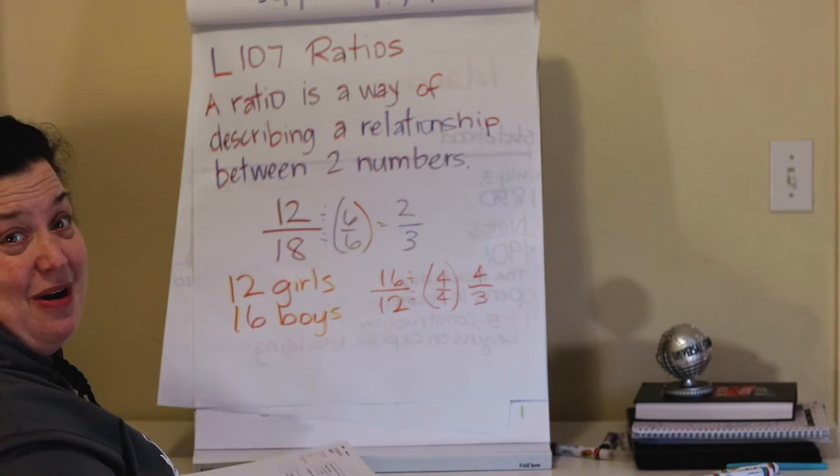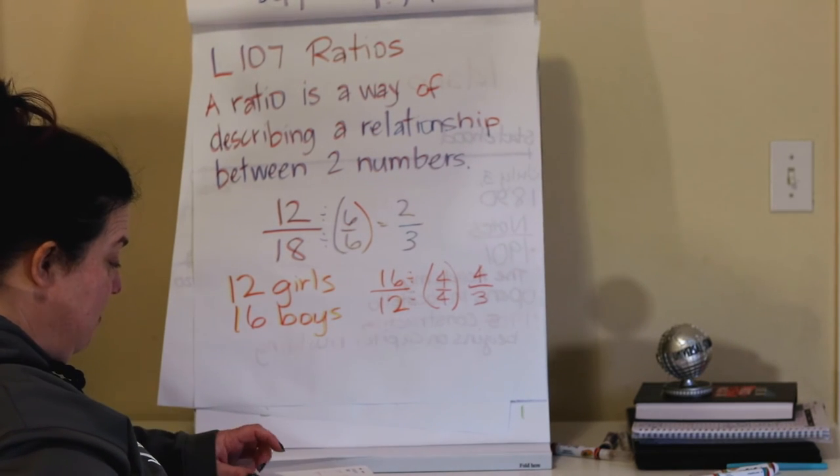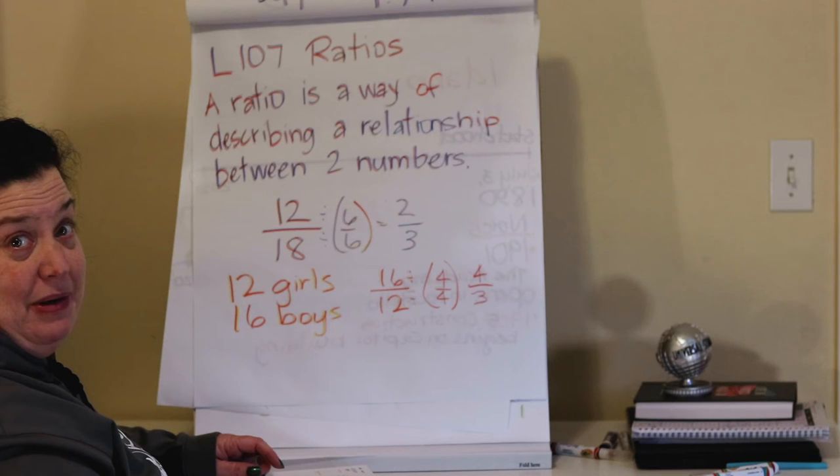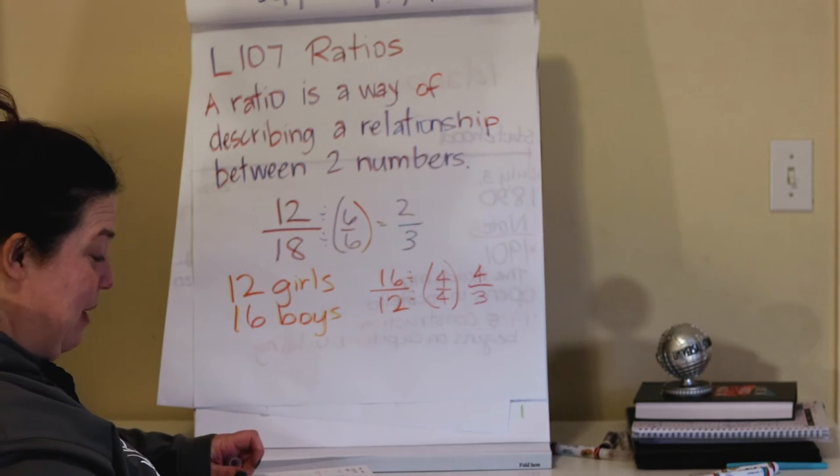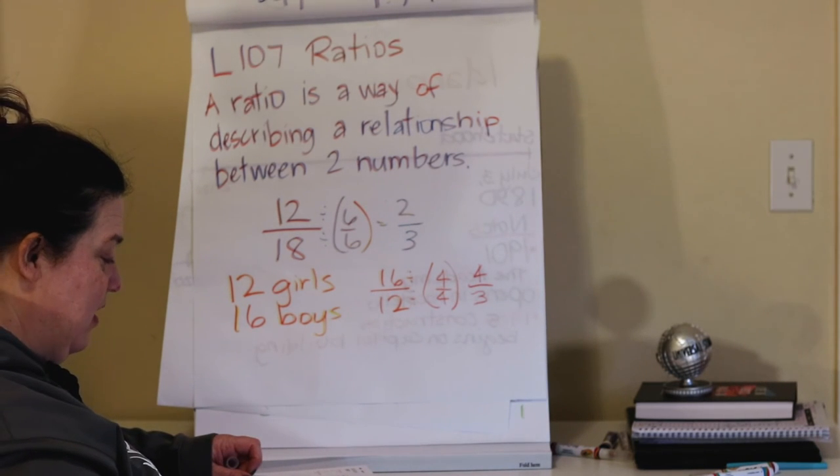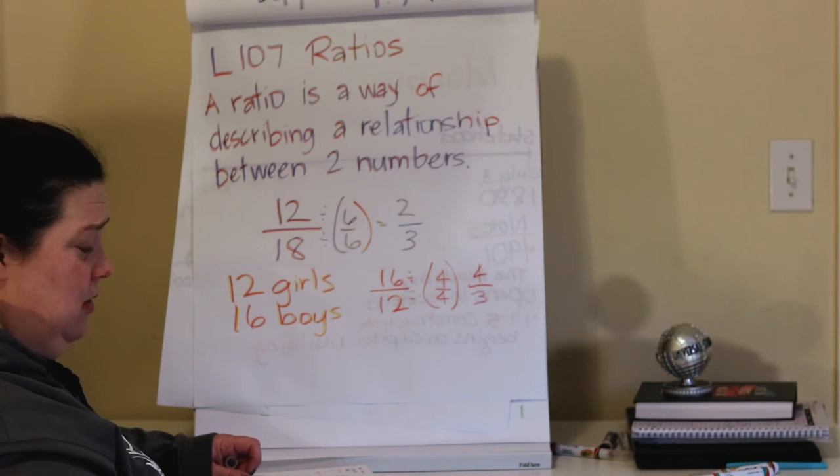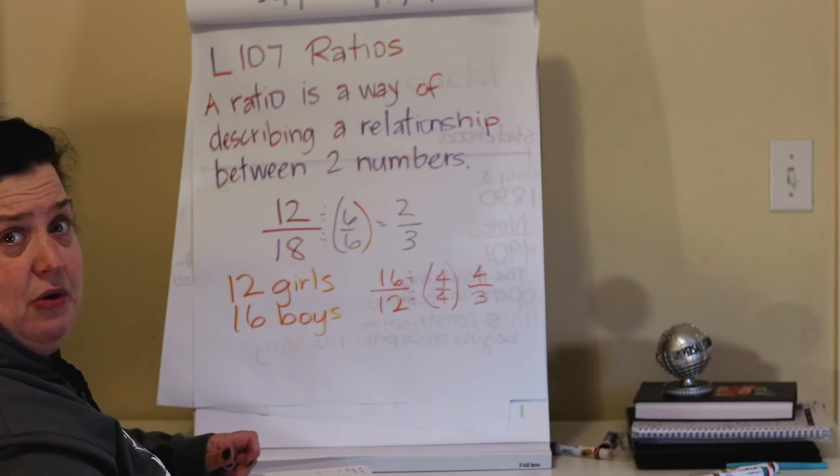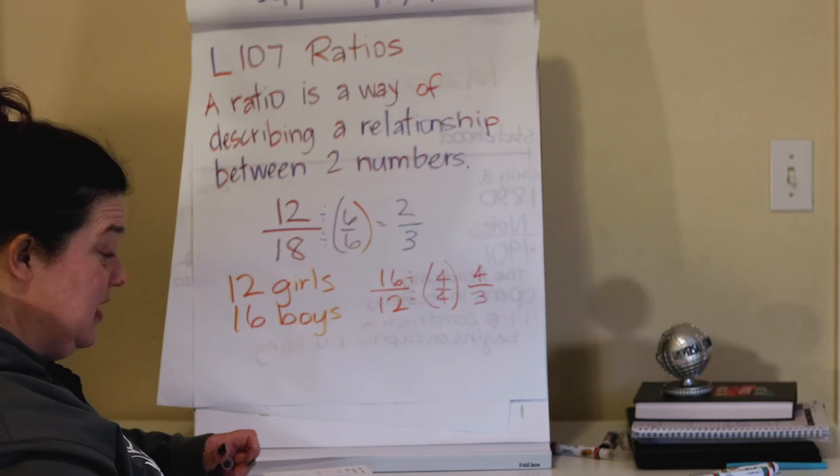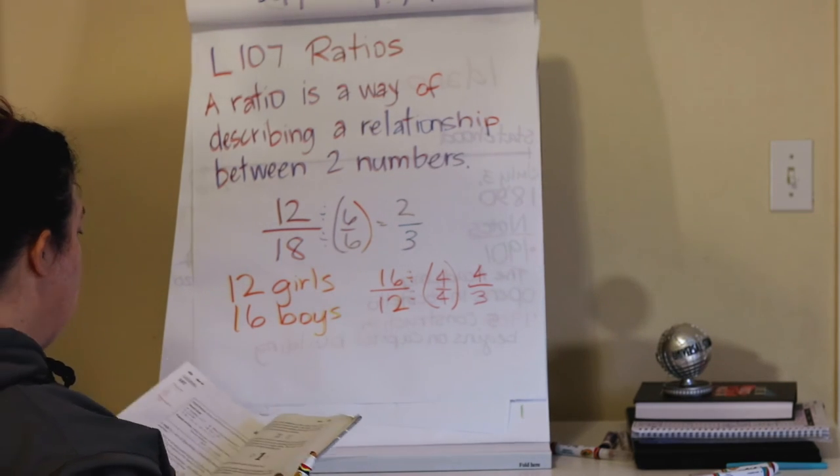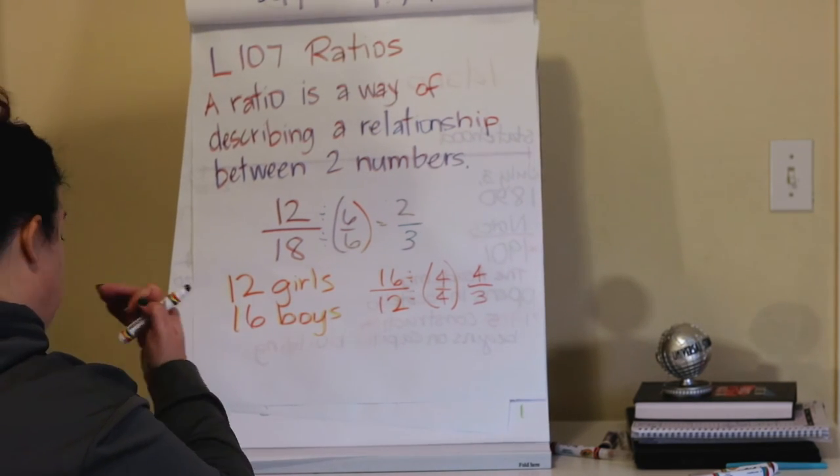Let's look at the practice problem. We have, there were 20 prairie dogs and 30 jackrabbits in Henry's backyard. Wow, I hope he has a really big backyard. What was the ratio of jackrabbits to prairie dogs in Henry's backyard? Okay, so let's write down in order what we are given.